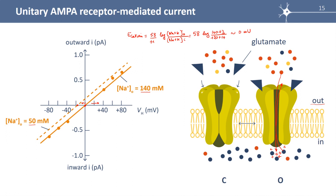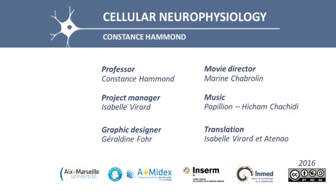Sometimes AMPA receptor channels are also permeable to calcium ions, depending on their subunit composition. This is explained in a supplement.